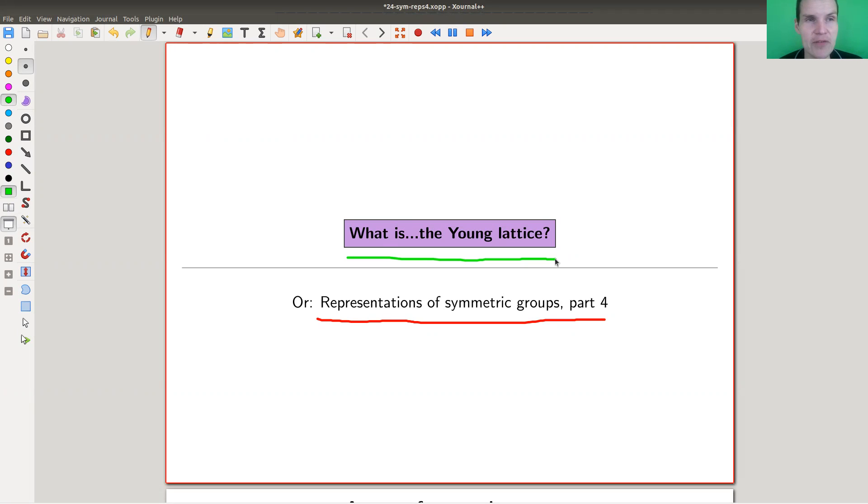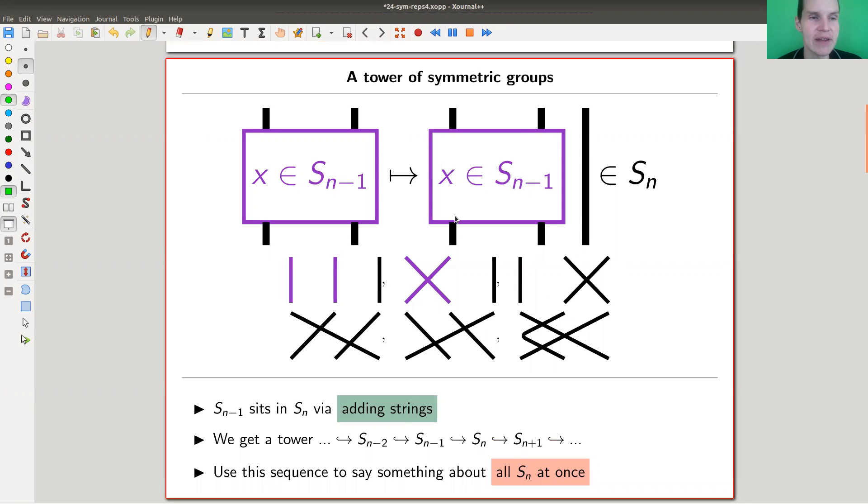This is the last one for the symmetric group, and then we jump to monoids. There's a lot more to say about symmetric groups. What we have seen so far is the indexing using Young diagrams, the construction of the modules using Specht modules, the character formula using Frobenius's character formula, and now I would like to study all symmetric groups at once.